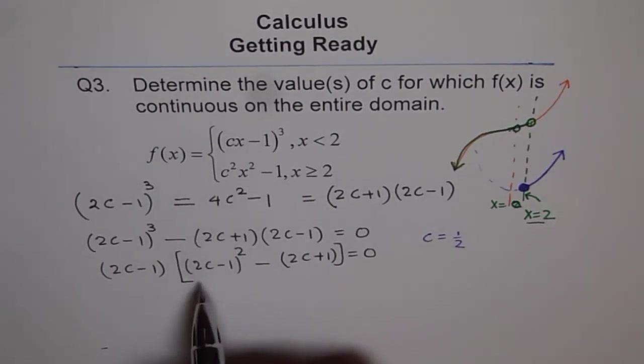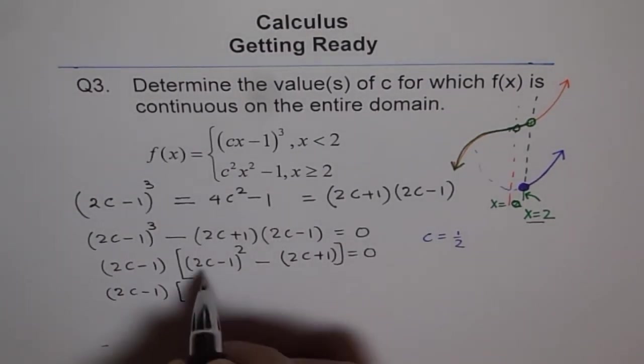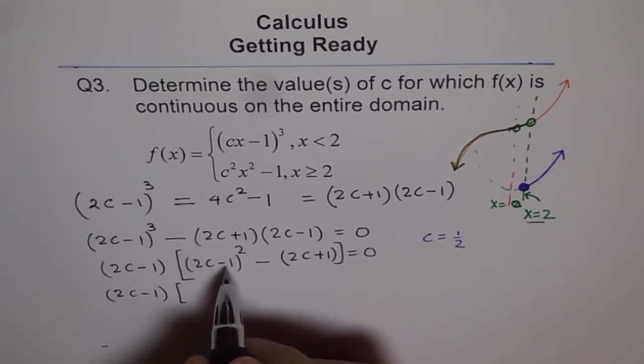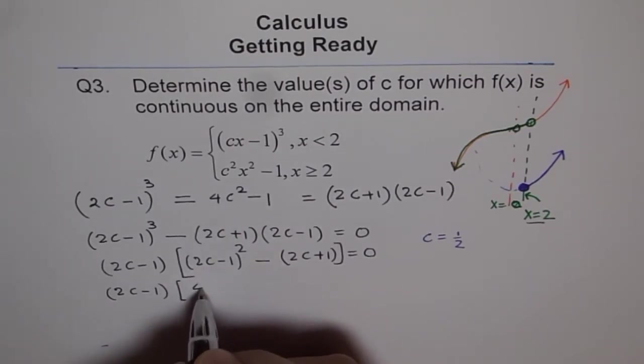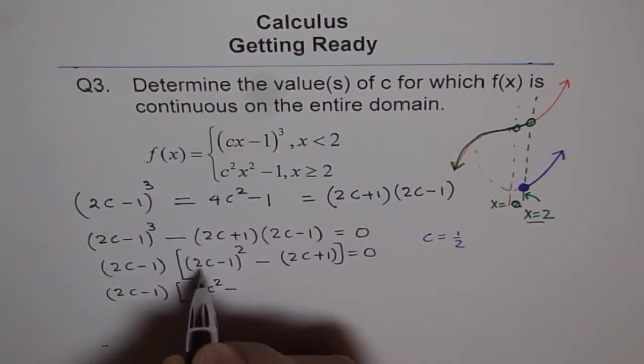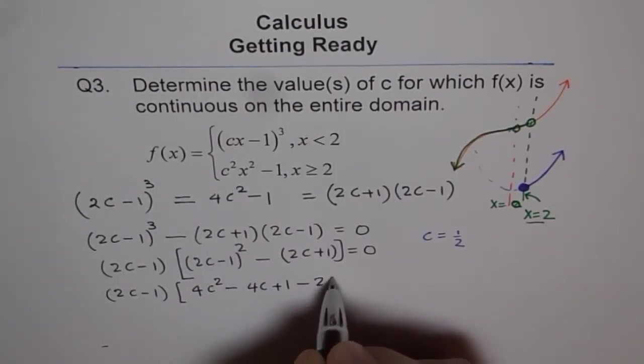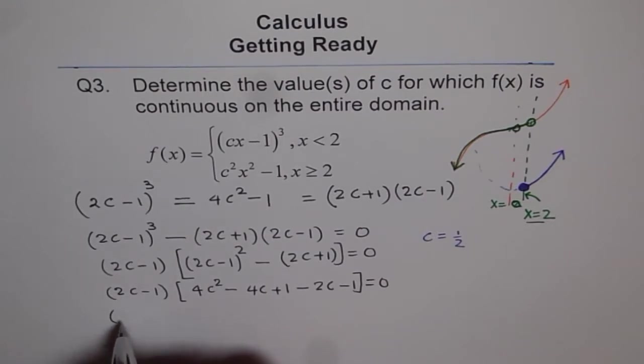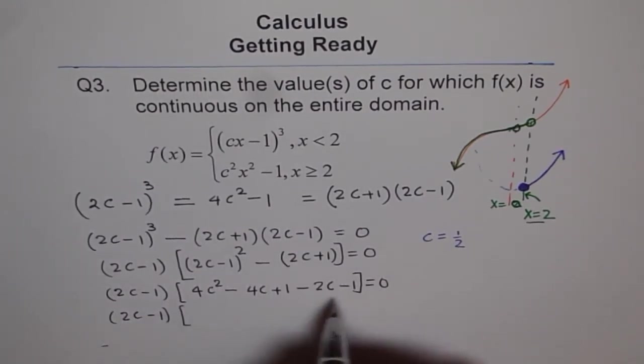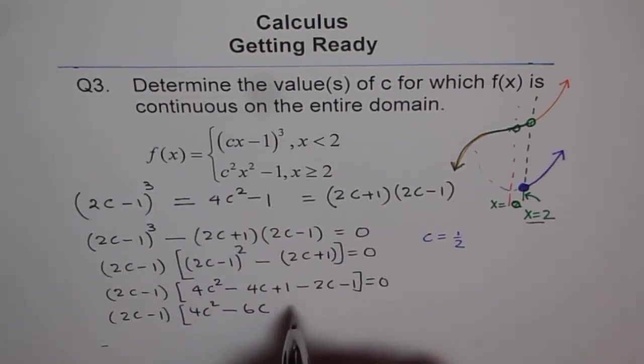Now, let's move on and see do we have more answers here. So we will say this is (2c - 1) and here let's expand this. 2c - 1 whole square. So if I expand this I get 4c² - 4c + 1 and let me open this minus 2c - 1, equals 0.